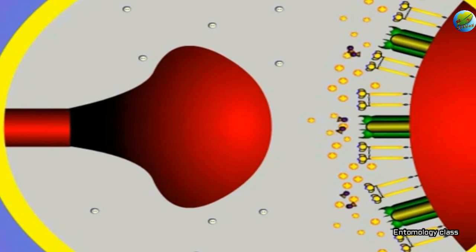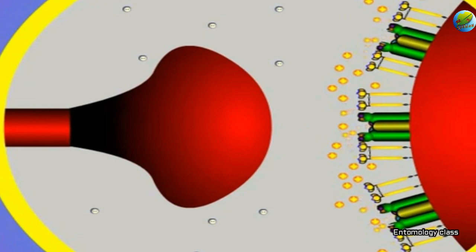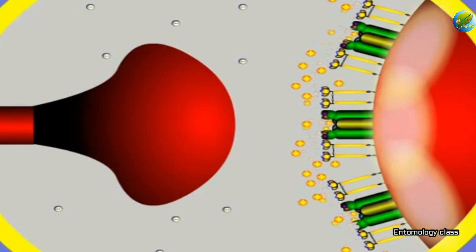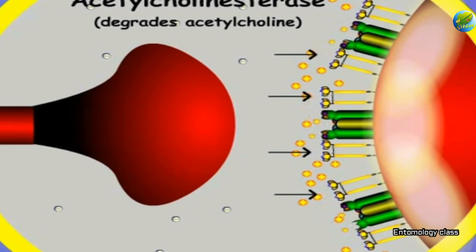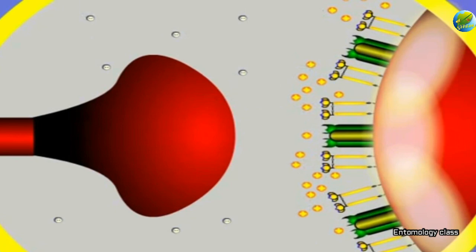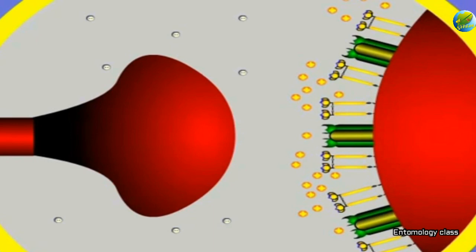The receptor binding causes the ion channel to open. Cations such as sodium ions enter inside along the gradient through the open ion channel, causing depolarization in the post-synaptic membrane. If the depolarization is sufficiently high, it will stimulate a new frequency of action potential, which will be transferred to the next neuron. The neurotransmitter acetylcholine is chemically degraded by acetylcholinesterase located in the synapse. Cleavage of the acetylcholine causes the ion channels to close, and the synaptic membrane of the post-synaptic neuron then returns to its resting membrane potential.